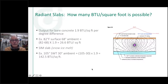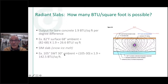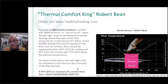For snow melt, let's say a 105-degree supply to a slab in 30-degree ambient: 105 minus 30 times 1.9 gives a massive BTU output per square foot. That's the same formula, just with a much wider delta T. That explains how the same square foot of concrete can deliver so much more heat outside as a snow-melt slab compared to inside a building — it's all driven by the larger temperature difference.